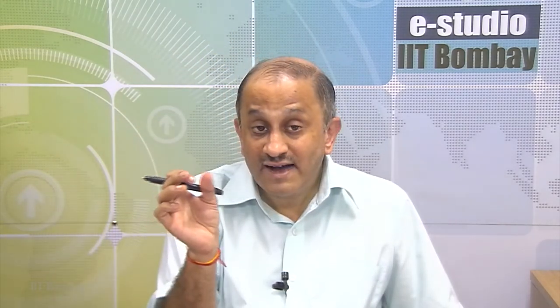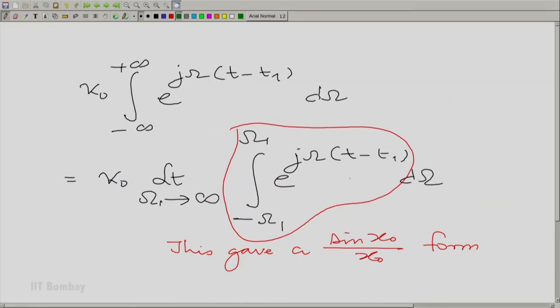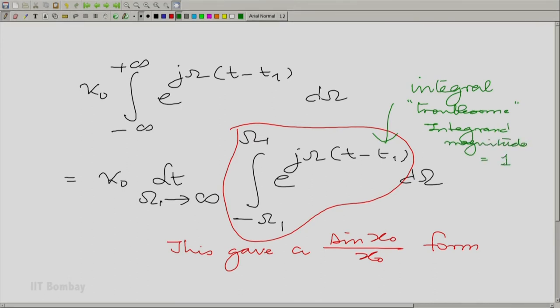It is interesting. What we find is that as long as you have taken a large enough value for the limits of the integral, you seem to be going towards 0, and it is also a function of t − t₁. What exactly is happening? If you look at the integral, it is troublesome because the integrand has a magnitude of 1 — a magnitude-1 integrand integrated potentially over all the real axis. Actually, the integral is divergent. That is the problem — it is not a convergent integral.